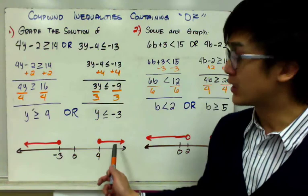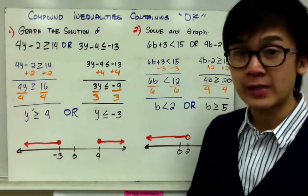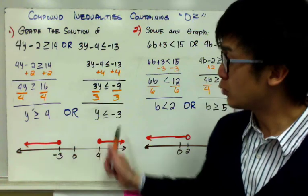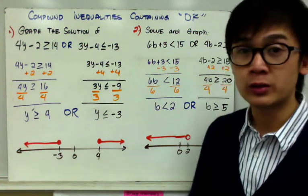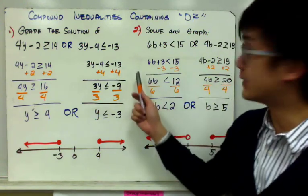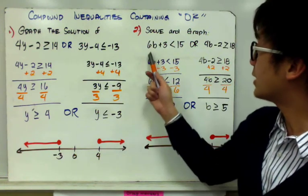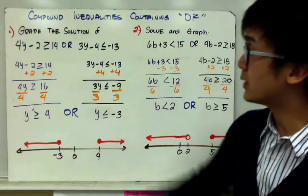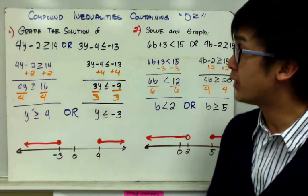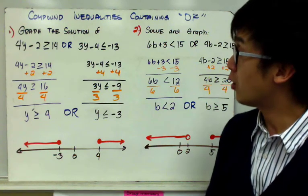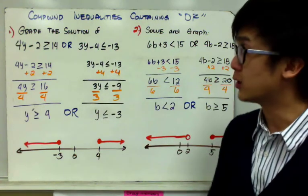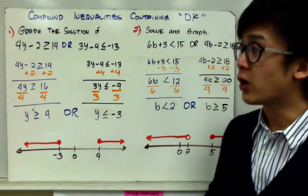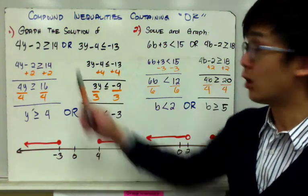All graphs of the OR operation will behave the same way — splitting into two directions. Compared to the AND examples, which meet in the middle, this one splits outward. We call this the disjoint graph, while the AND operation produces a conjunction graph. Unlike the AND operation, which can be written in two notations, the OR operation only has one notation.